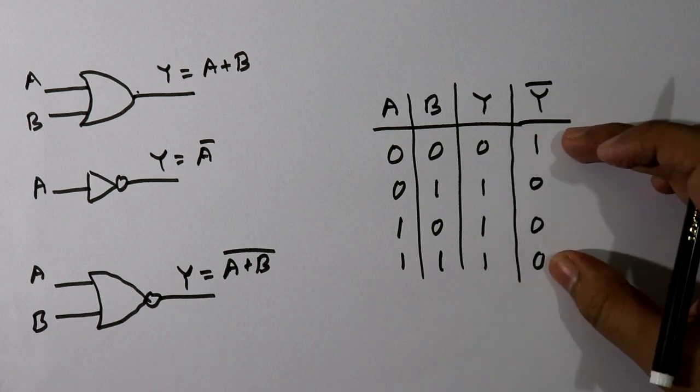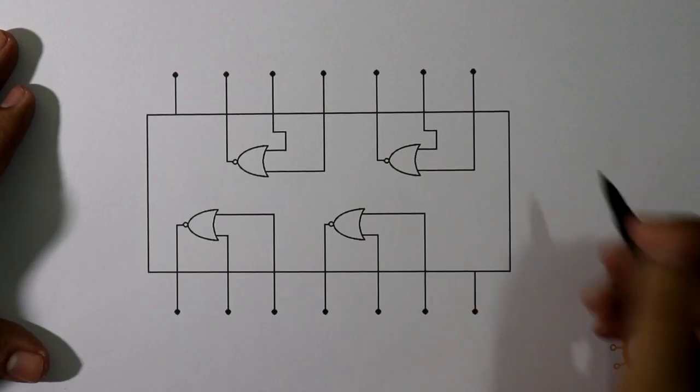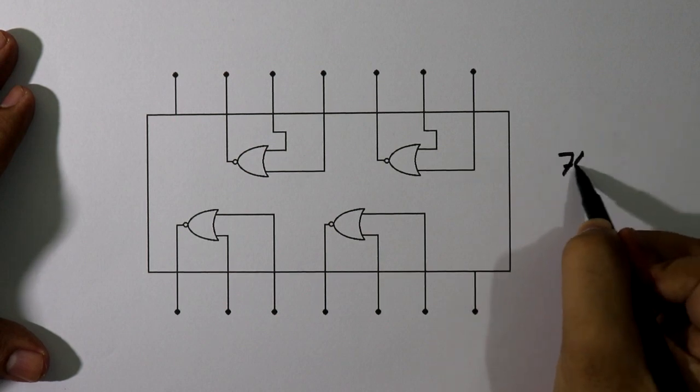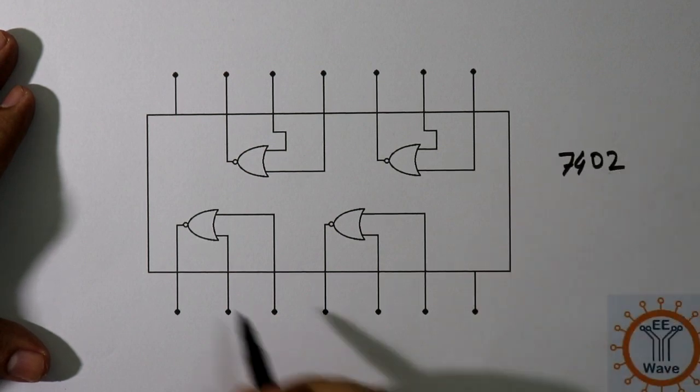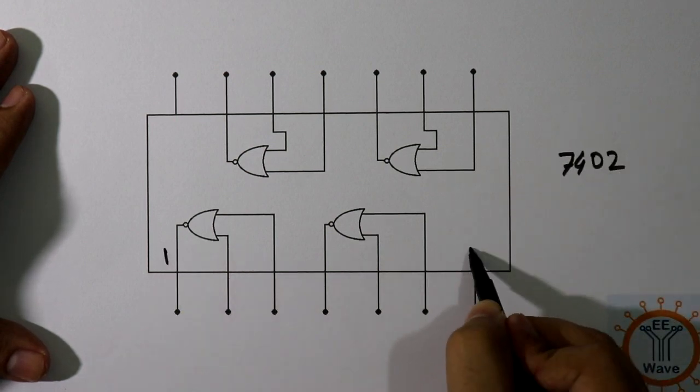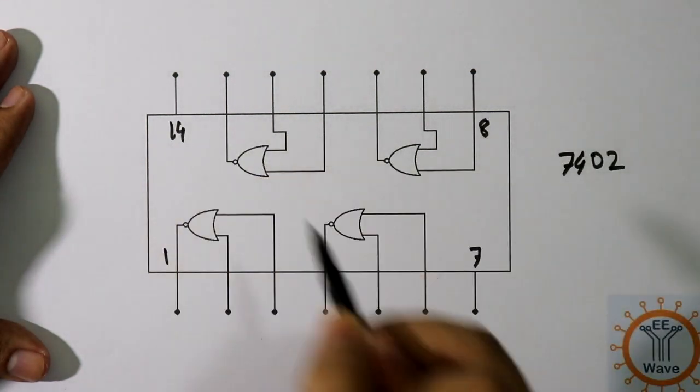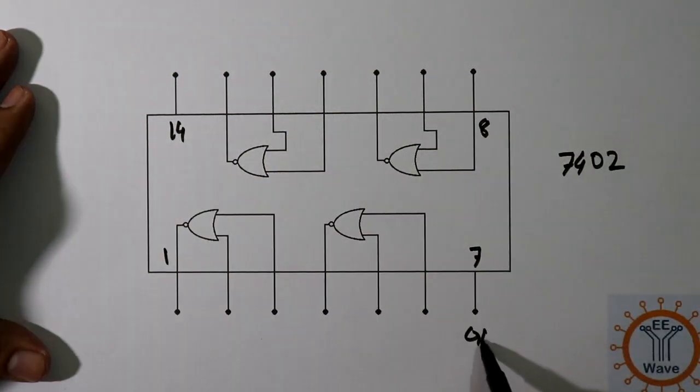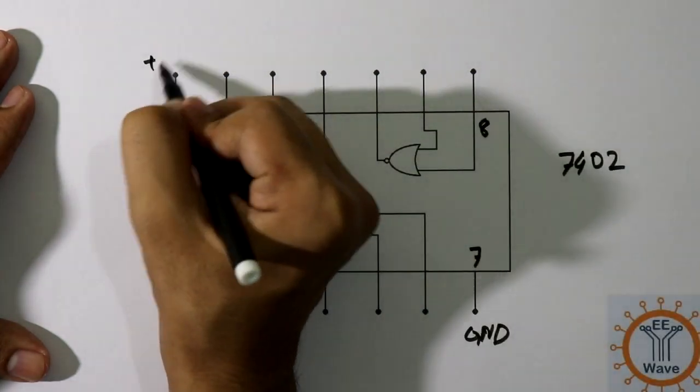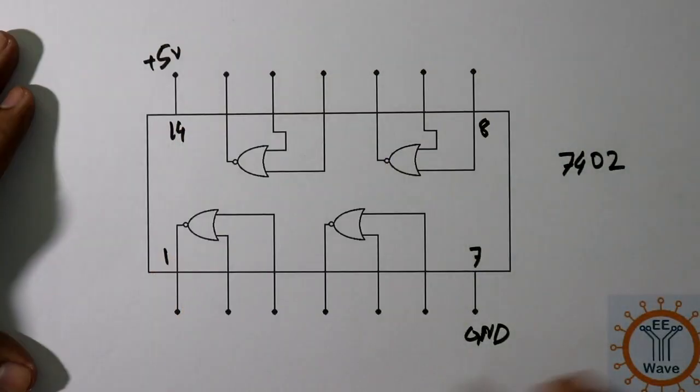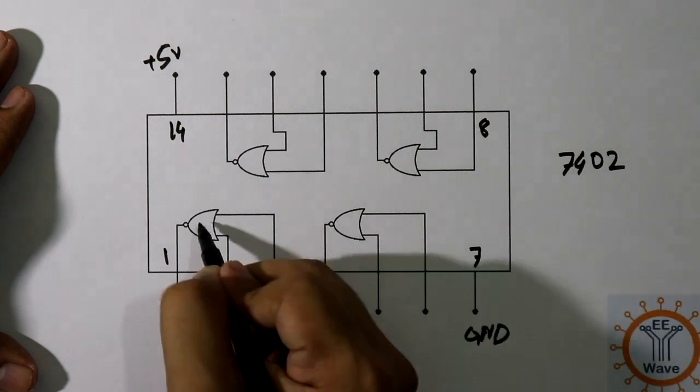Now let's see the pin diagram of NOR gate IC 7402. Here it is pin number 1, pin number 7, pin number 8, and pin number 14. Pin number 7 is connected to ground, pin number 14 is connected to plus 5 volt, and this IC has four NOR gates: NOR gate 1, NOR gate 2, NOR gate 3, and NOR gate 4.